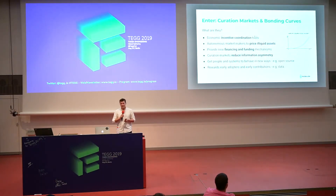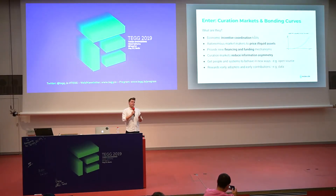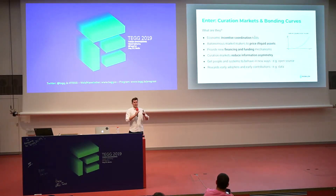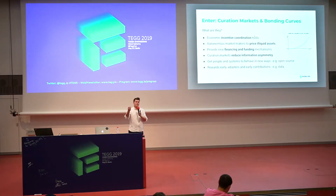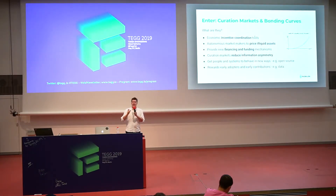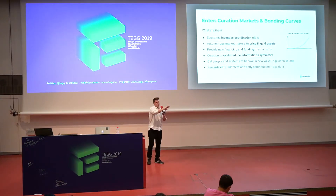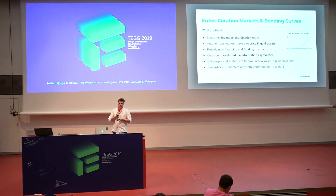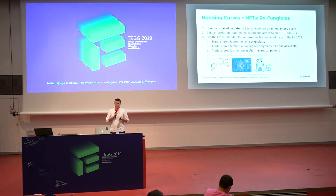Bonding curves are essentially incentive coordination tools — an autonomous market maker that we can use to price illiquid assets. They provide new financing and funding mechanisms and reduce information asymmetry. As a quick recap: a bonding curve is a smart contract that creates a continuous issuance of tokens for a specific objective. Anyone at any time can trade with that contract by sending funds and receiving tokens, or sending tokens and receiving funds, with pricing structured by an algorithm.